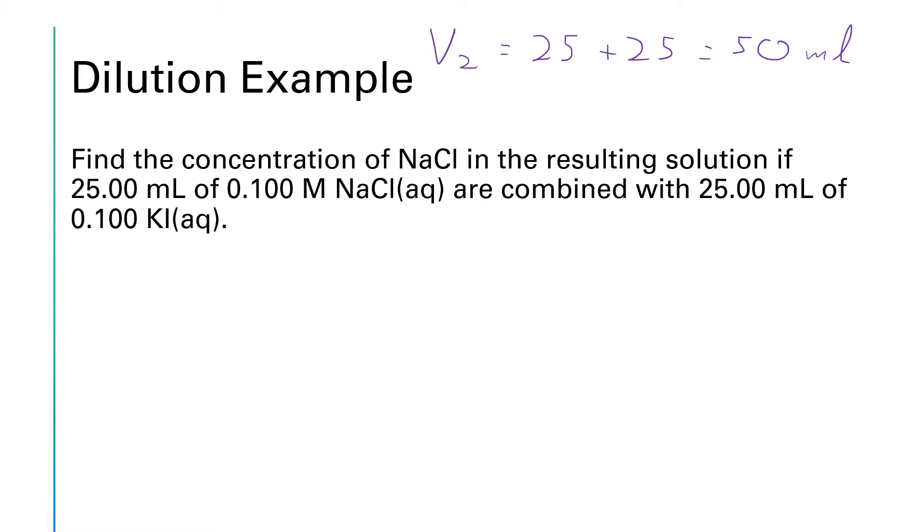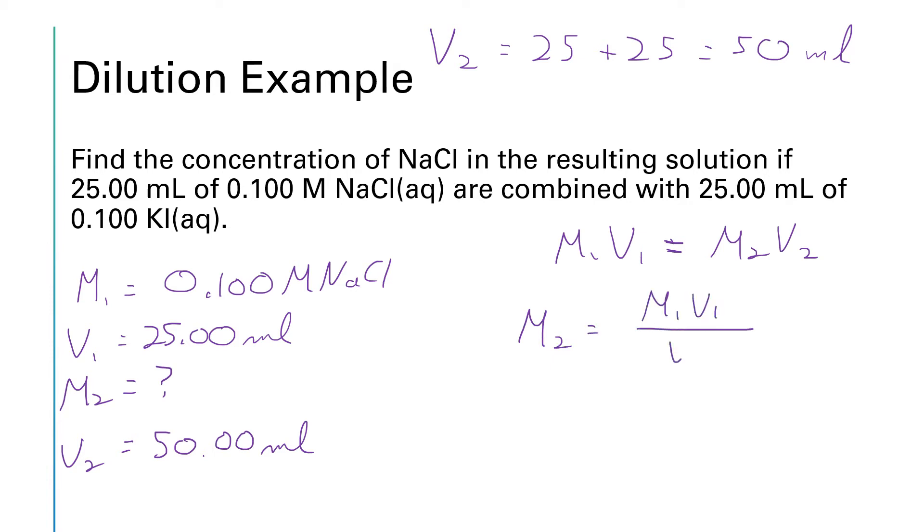And let's see our m1 will be the 0.1 molar NaCl. Our v1 will be the 25 mls. Our m2 is what we're trying to find and our v2 was what you got by mixing the two solutions or 50 milliliters. Now our dilution equation says m1v1 is equal to m2v2. If we rearrange this equation to solve for m2 well we need to divide both sides by v2. So m2 will be equal to m1v1 divided by v2.